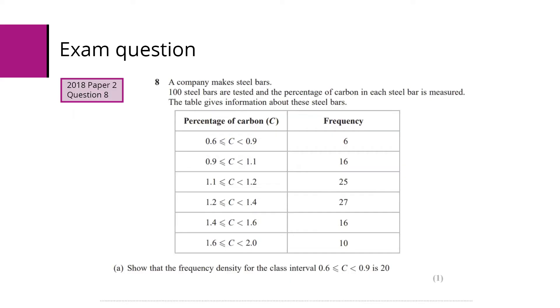The first part says show that the frequency density for the class interval 0.6 less than or equal to c less than 0.9 is 20. So we're given the value of 20, so we're just being expected to use our knowledge of frequency density, frequency over class width, and show that in this case frequency density is 6 divided by the class width of 0.6 to 0.9, which is 0.3, so 6 divided by 0.3, which is 20 as expected.